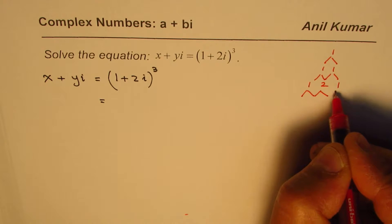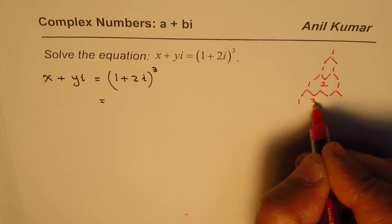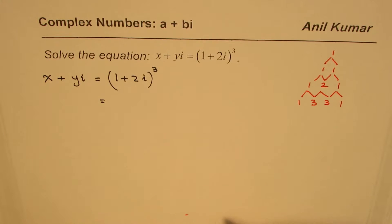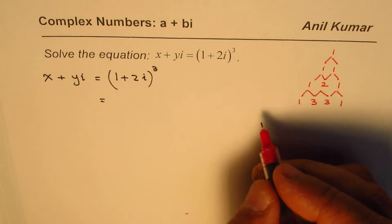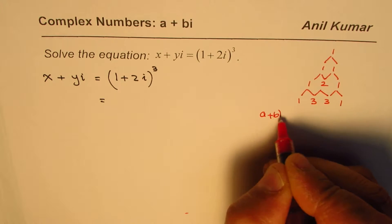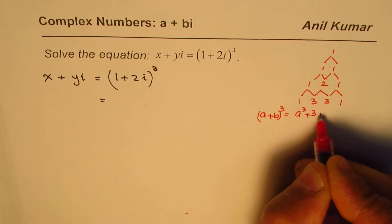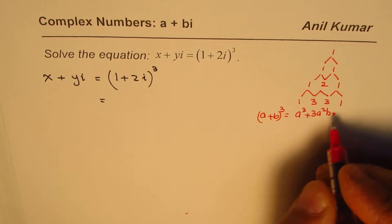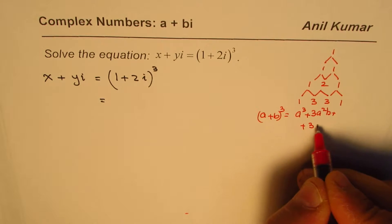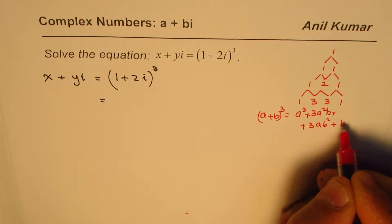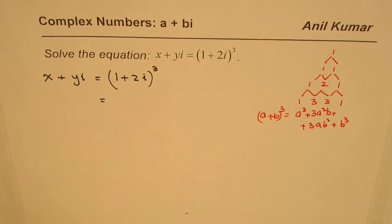So we get 1, 3, 3, 1. You could also expand using the formulas if you remember, which is (a plus b)³ equals a³ plus 3a²b plus 3ab² plus b³, which you can get from Pascal's triangle.